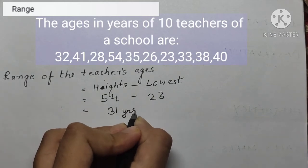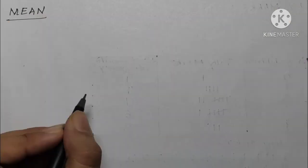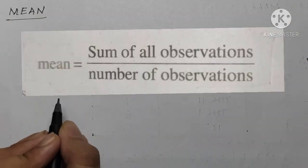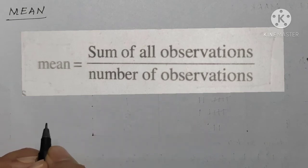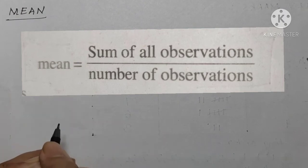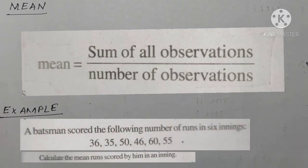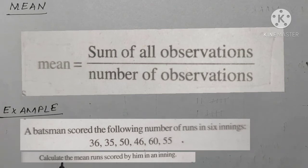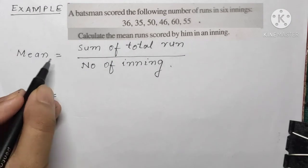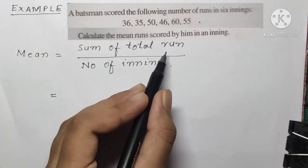Mean is the sum of the given observations divided by the number of given observations. Example: a batsman scored the following runs in six innings: 36, 35, 50, 46, 60, and 55. Calculate the mean runs scored per inning. Mean equals sum of total runs divided by number of innings.